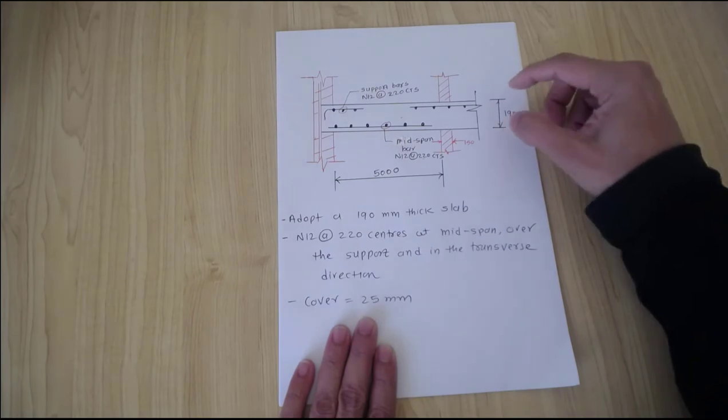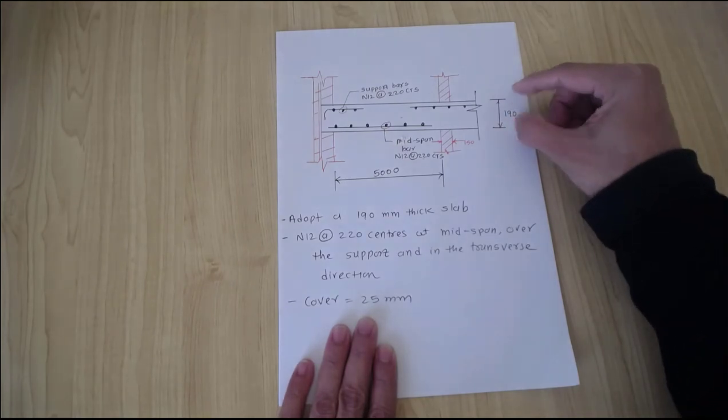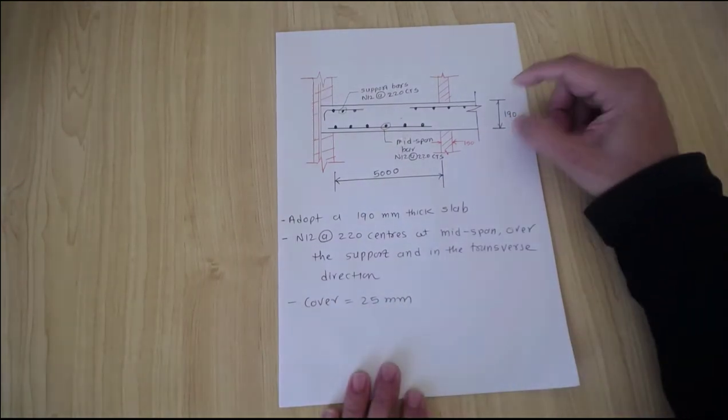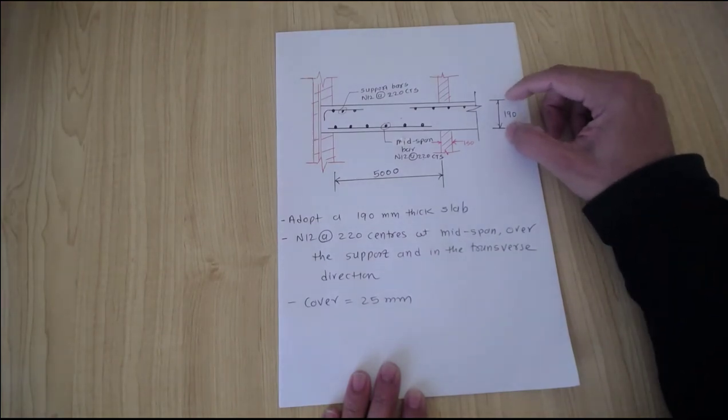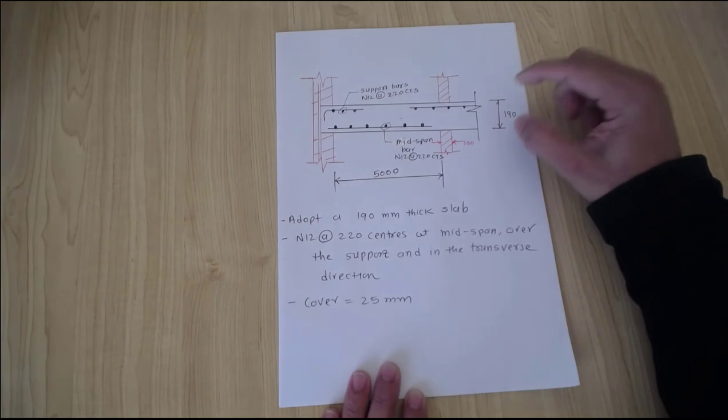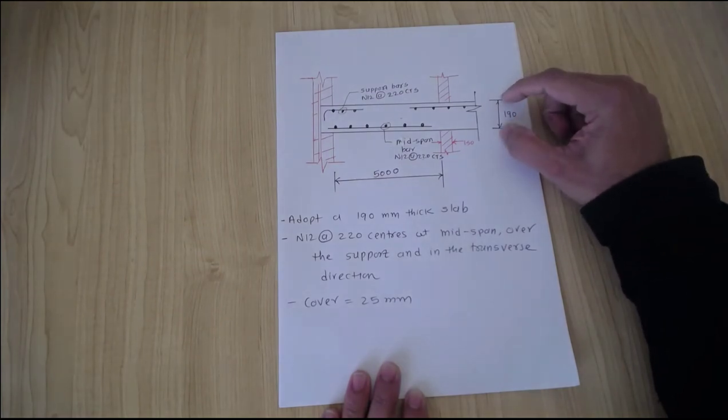That slab has a deflection check, moment check, and shear check. The slab thickness is 190 millimeters. It has deflection check, moment check, and shear check.